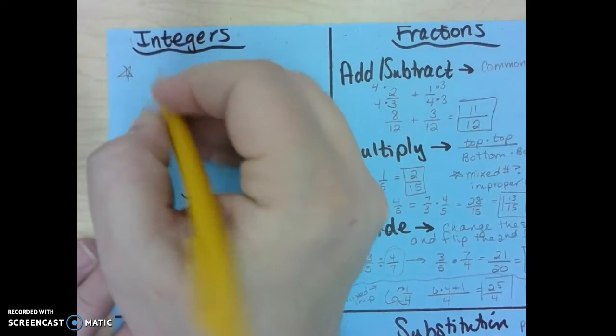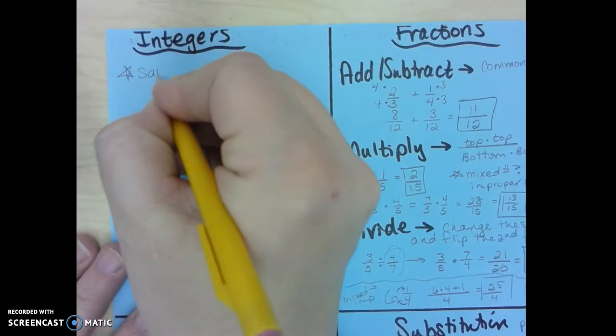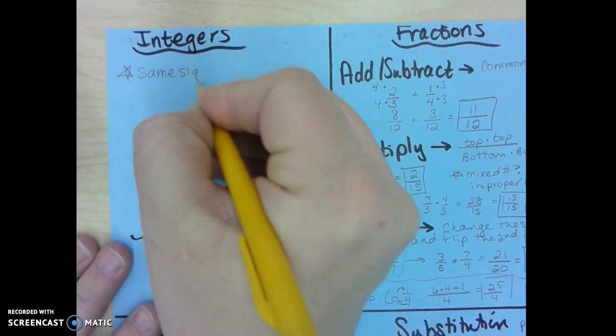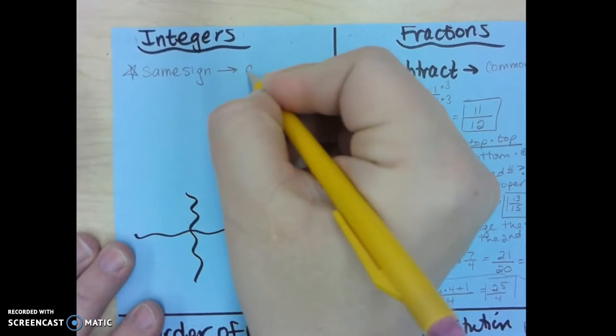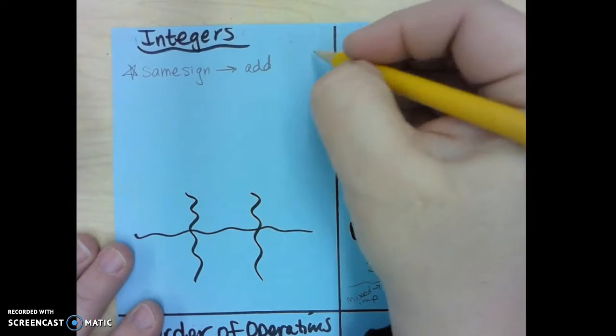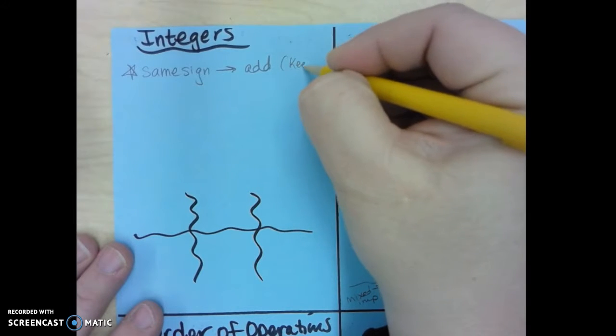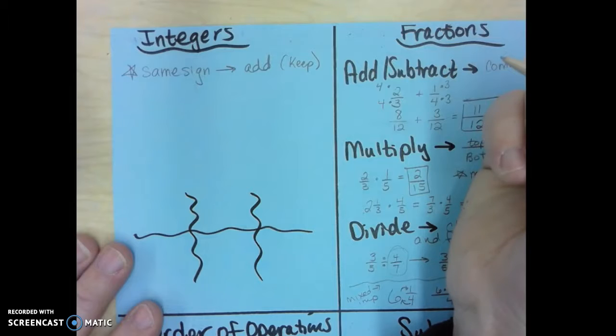And so remember, the first thing is same sign. If you have the same sign, you're going to add, and you're going to actually keep the sign that it was. So a negative 5 and a negative 6, same sign we add, and so it's negative 11.